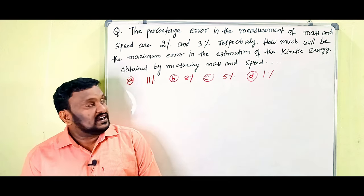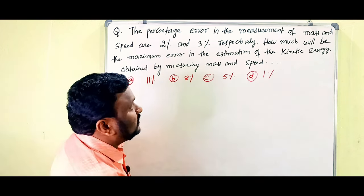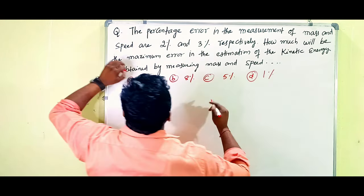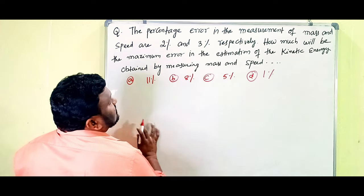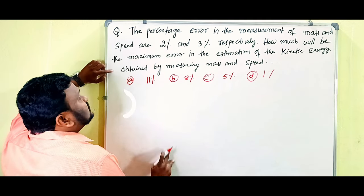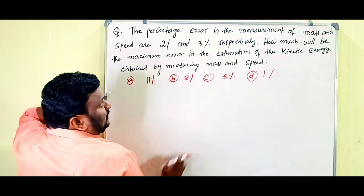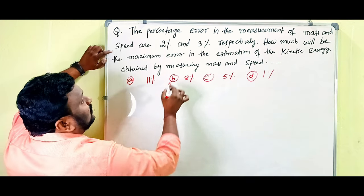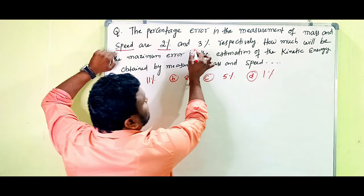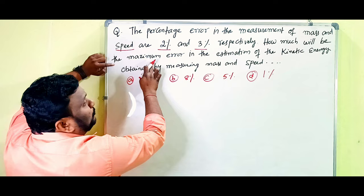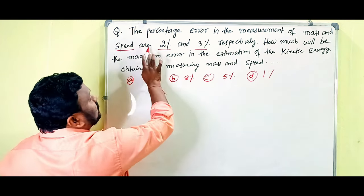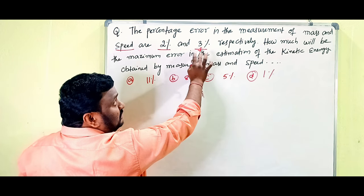See the next question. This is also on measurement of errors — specifically the product of errors. The percentage error in the measurement of mass and speed are 2% and 3% respectively. How much will be the maximum error in the estimation of kinetic energy obtained by measuring mass and speed?